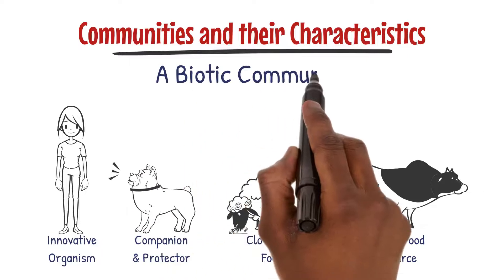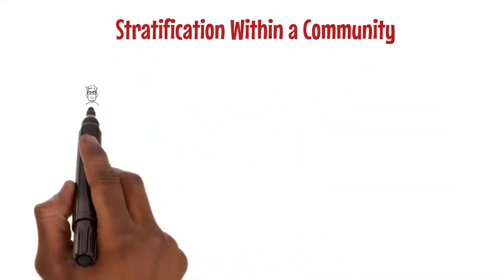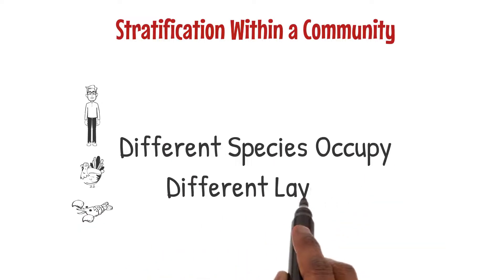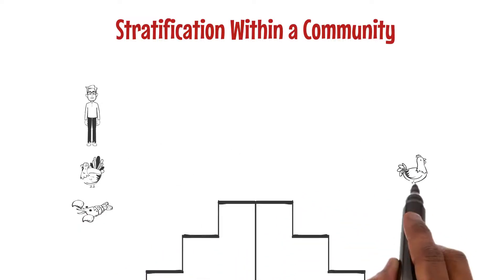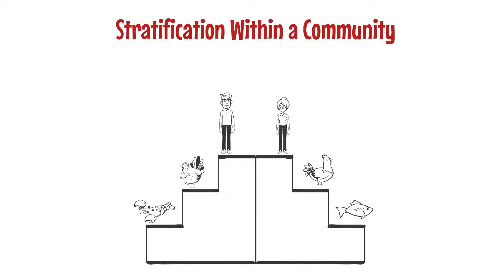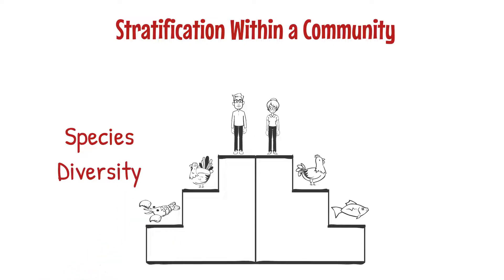Within a community there is often stratification, meaning that different species occupy different layers or niches. Just like a tall building with different floors, each species finds its place within the community. One important aspect is species diversity, which refers to the variety of species present in a community.